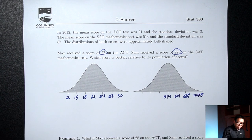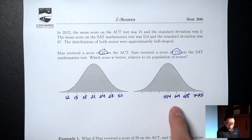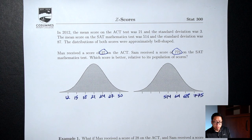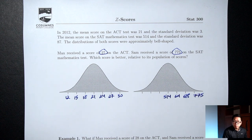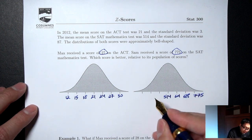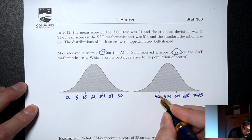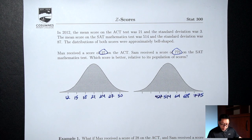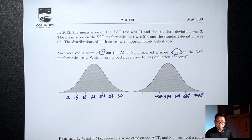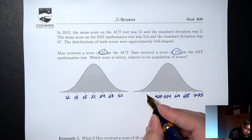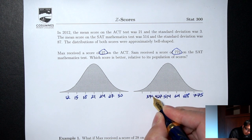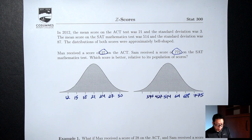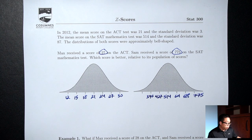Going the other direction, subtract the standard deviation: 514 minus 87 is 427, minus 87 again is 340, minus 87 one last time is 253.